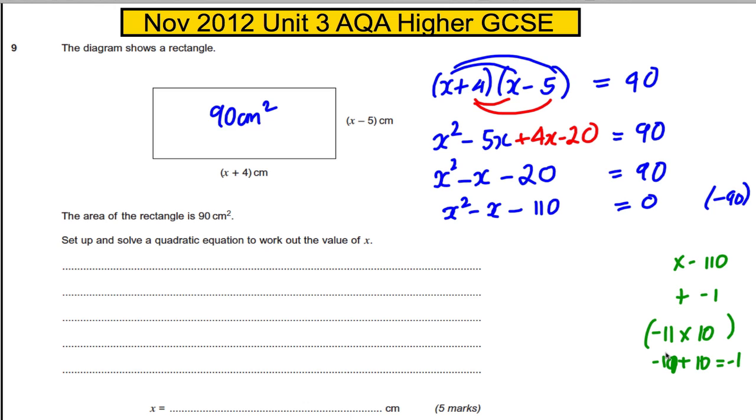Okay, so therefore this factorizes to x subtract 11 times x plus 10 is 0. So x is 11 or x is negative 10. Now you can ignore this one here because you can't have a length that's negative, so this must be our x.